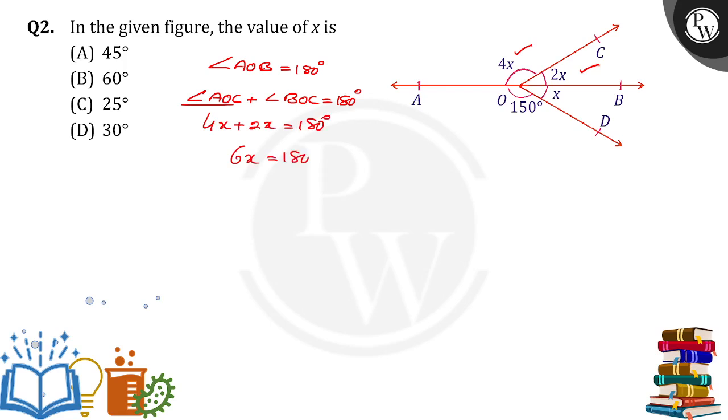6X is equal to 180. X is equal to 180 by 6. We will get 30 degrees.